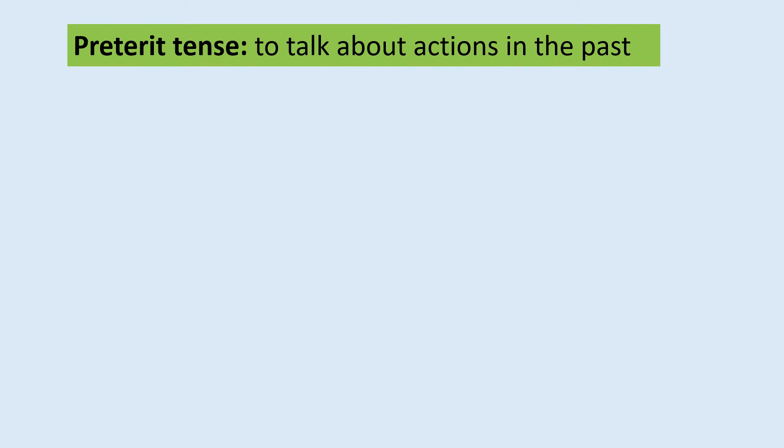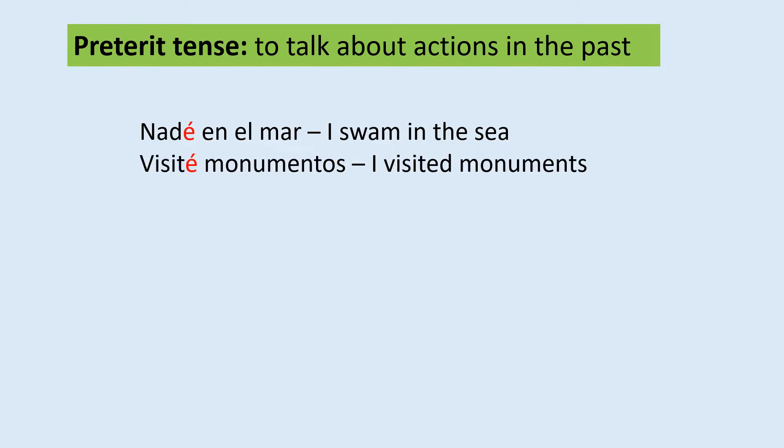In previous lessons, we have learned how to use the preterite tense to talk about holidays in the past. We have used the preterite tense to talk about actions in the past. For example, nadé en el mar — I swam in the sea — or visité monumentos — I visited monuments — or saqué fotos — I took photos. I remind you that that 'e' with the accent is very important to mark it in the past.